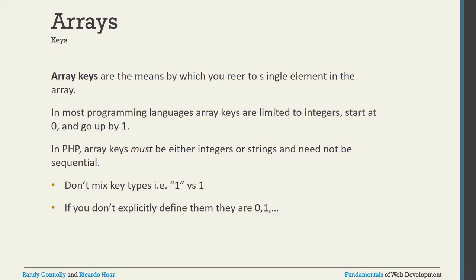Talking about array keys: in most programming languages, keys are limited to integers starting from zero going up as 0, 1, 2, 3, 4, 5. But PHP keys can be either integers or strings — both are allowed. PHP array keys also do not need to be sequential, unlike other programming languages. However, don't mix key types. If you do not explicitly define them, they default to 0, 1, and so on.